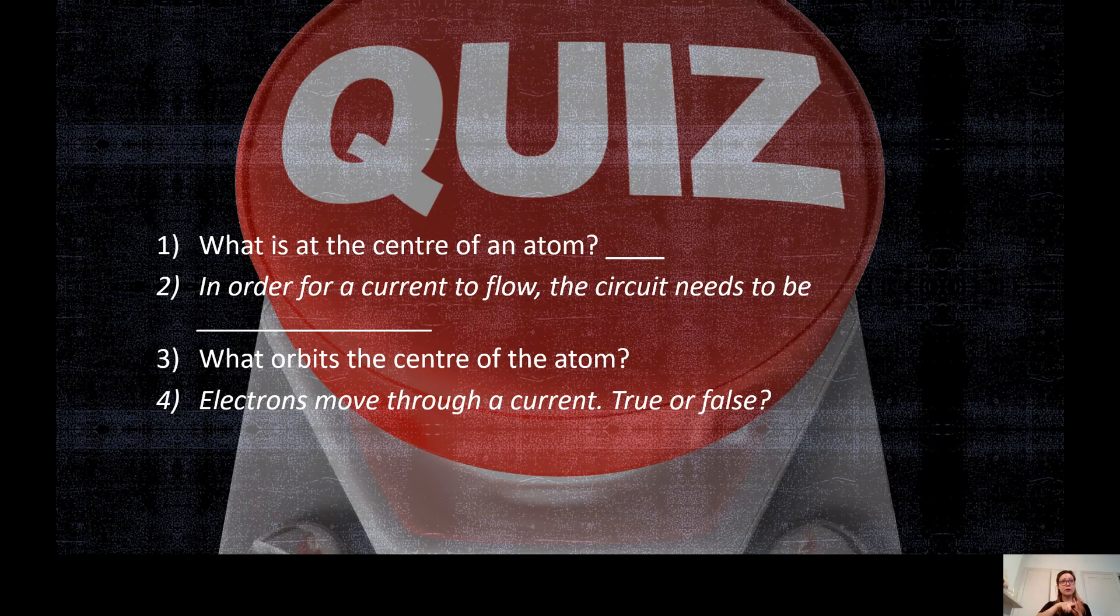And question three what orbits the centre of the atom? So what goes around what spins around the centre of the atom? And question four electrons move through a current is this true or false? Electrons move through a current true or false? Please pause this video now and write down your answers before we go through the answers together.